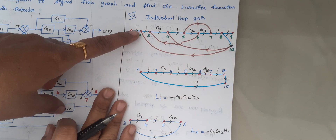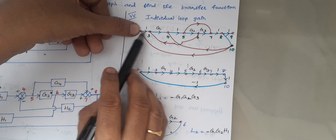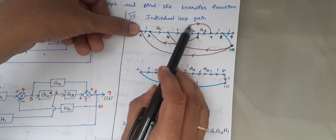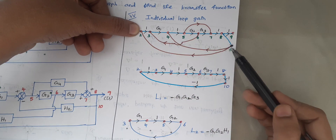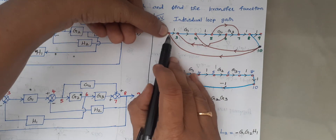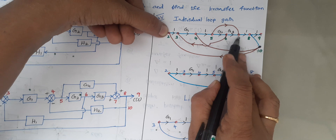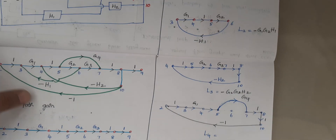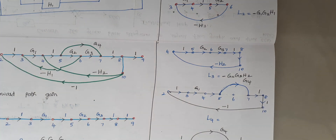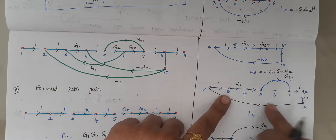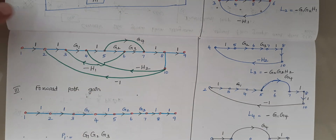Another loop: starting at node 2, going through 3, 4, 5, then from 5 to 7 directly, then 7 to 8, 8 to 10, and back to node 2. Multiplying the values gives G1 × G4 × (−1), so the loop gain is minus G1 G4.